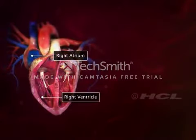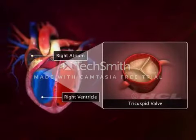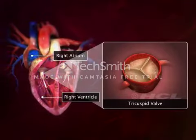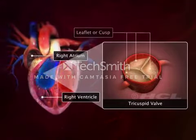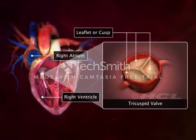The right atrium and the right ventricle are connected by the tricuspid valve. As the name suggests, it has three leaflets or cusps.